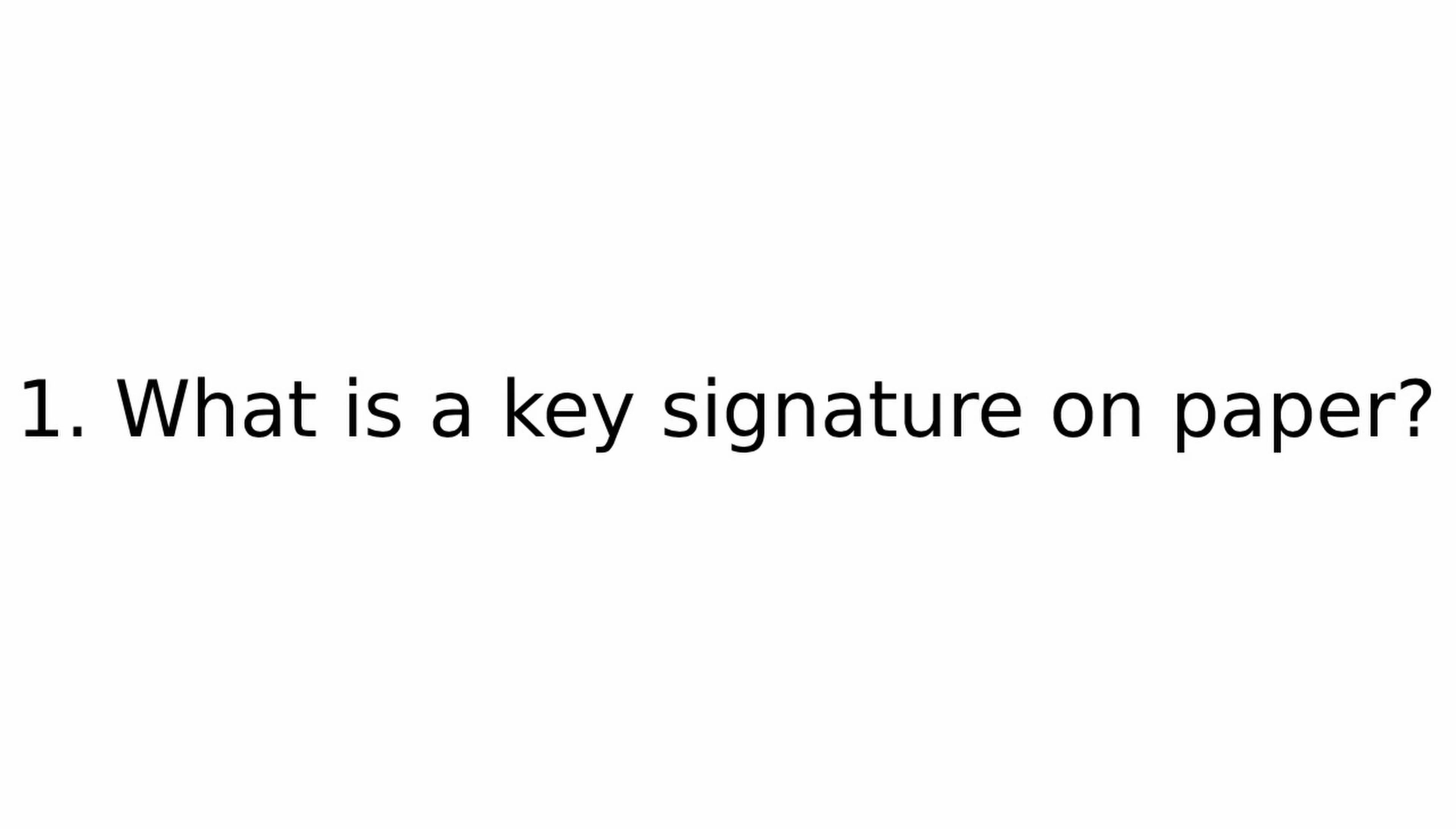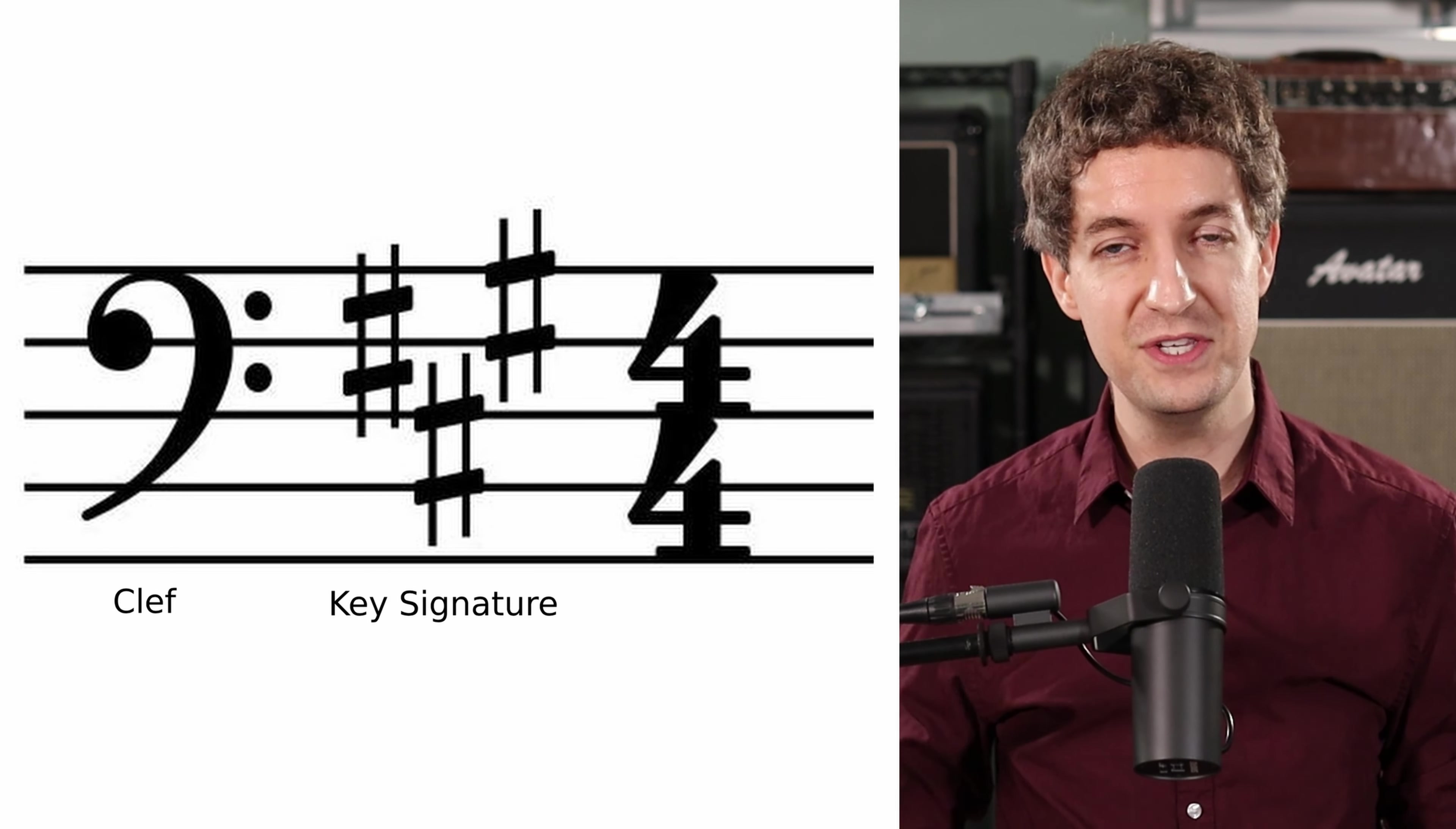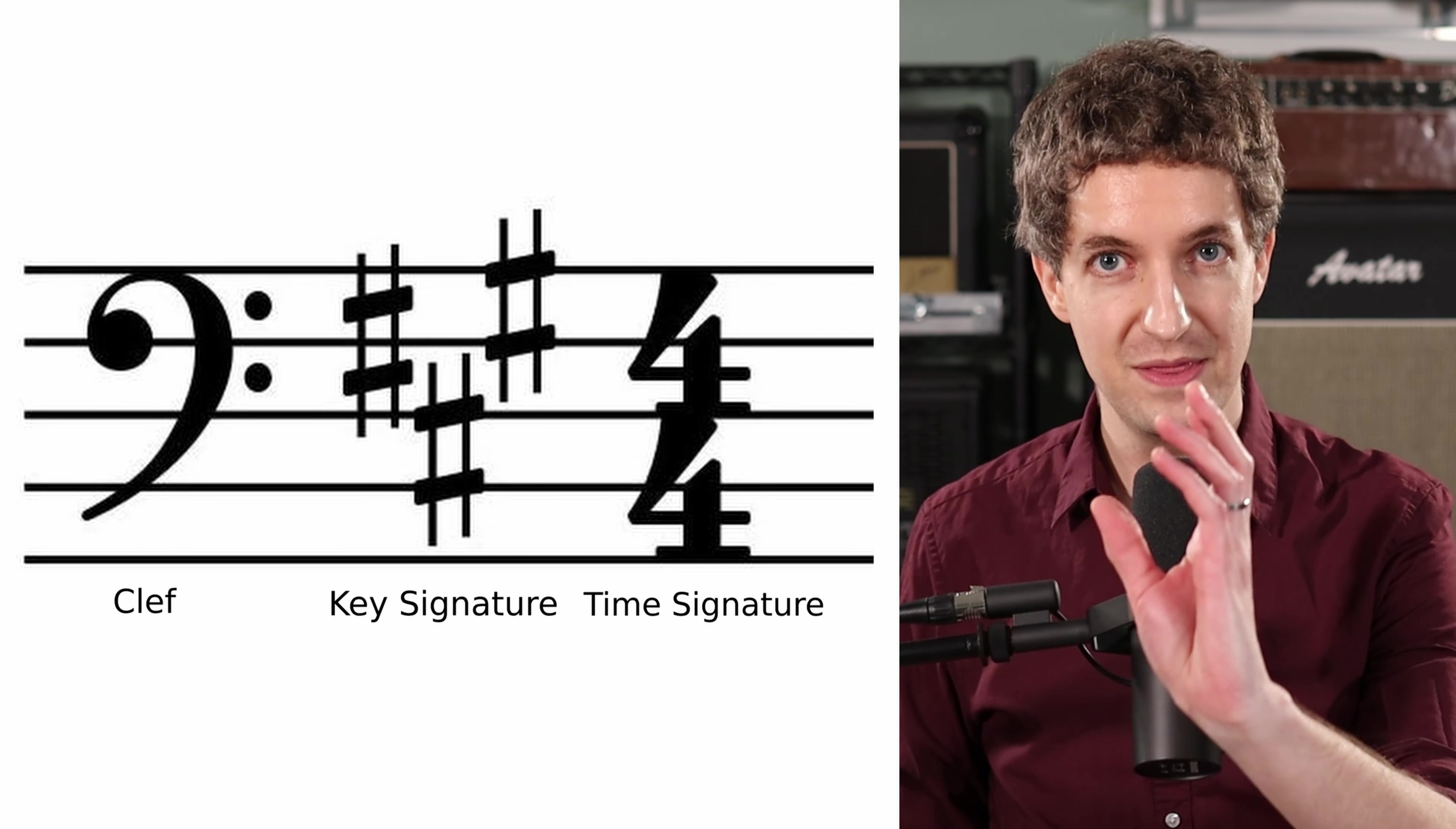So what is a key signature on paper? When you read music, the first thing you're going to see is your clef, typically treble clef or bass clef, those are the two most common, although there are others. The clef has to do with the range of notes that we play. Following the clef is our key signature. You may see nothing there, it may just be blank, or you may see as many as seven sharps or seven flats. That's the key signature, the sharps or flats at the beginning of the piece. We can't have sharps and flats in a key signature. It will either be all sharps or all flats or nothing in the case of C. Then following that, we have the time signature. So the key signature lives between the clef and the time signature.